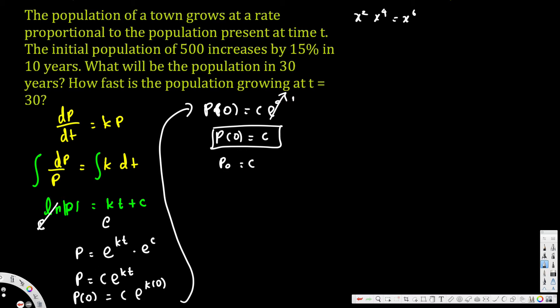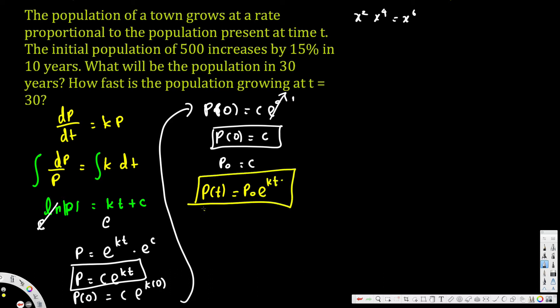We replace C with P₀, so the equation becomes P(t) = P₀ · e^(kt). This is the equation we derived. Now let's see how to use it to answer the questions — specifically, the population at 30 years.